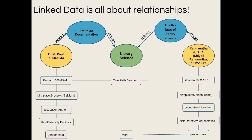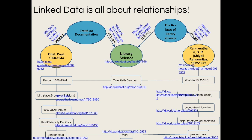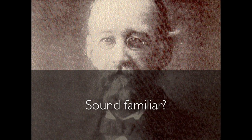Linked data can go even further by linking additional contextual information. The possibilities for potential relationships are practically endless. In the example we see here, nearly every element could be described with a URI. Therefore, we can leverage linked data technology to encode the relationships and utilize open, linked metadata from external sources available on the web. The idea of recording relationships between bibliographic entities to organize resources and promote discovery is at the core of our cataloging work. Charles Ami Cutter knew this when he outlined his Rules for a Dictionary Catalog in 1867, and we're still striving for this today.